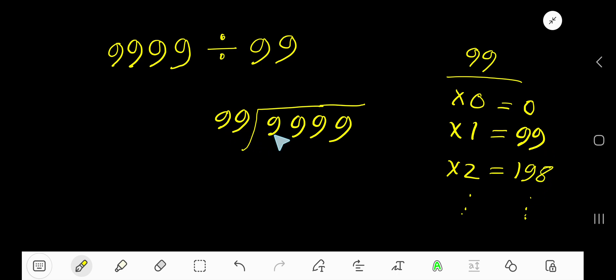99 goes into the first digit how many times? Since this is less than 99, zero times. Zero times 99 is zero. Subtract and bring down the next digit. 99 goes into 99 how many times? One time. Write 1.